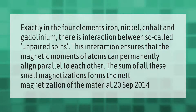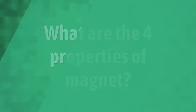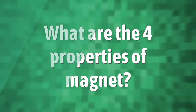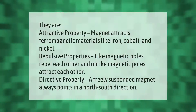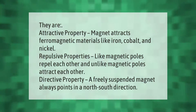The net magnetization of the material forms its overall magnetic behavior. Magnets have attractive properties: they attract ferromagnetic materials like iron, cobalt, and nickel. They also have repulsive properties: like magnetic poles repel each other, while unlike magnetic poles attract each other.